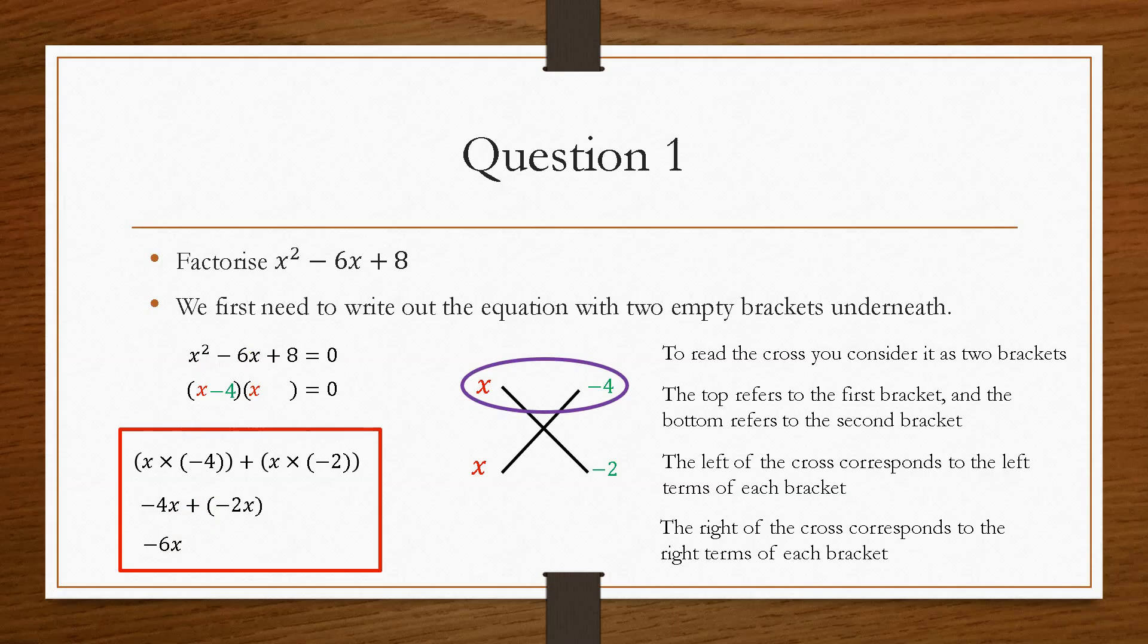So that's your first bracket, x minus 4, and the second bracket is x minus 2, because remember the top refers to the first bracket and the bottom refers to the second bracket. And that's how you would go about factorising the trinomial using the cross method.